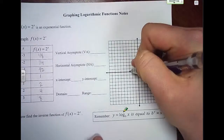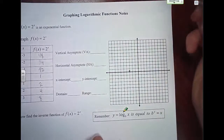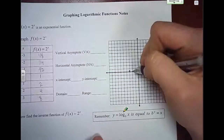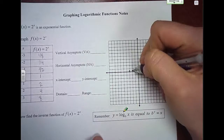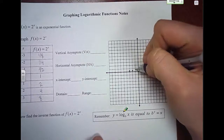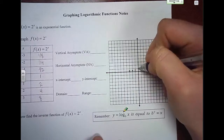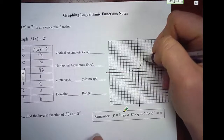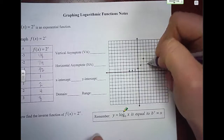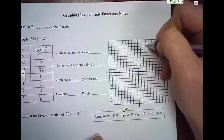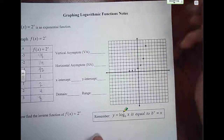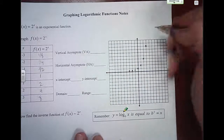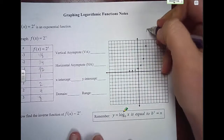Let's go ahead and graph those points. Negative 3, one eighth — it's very small, so just do the best you can. Negative 2, one fourth. Negative 1, one half. Zero, 1. One, 2. Two, 4. And 3, 8. So you get this lovely little curve graph.